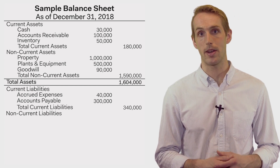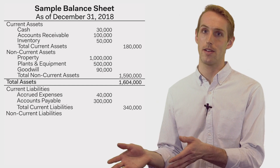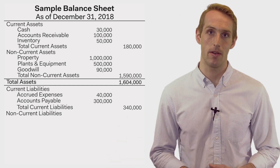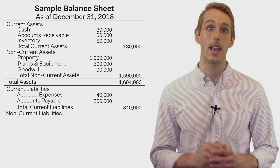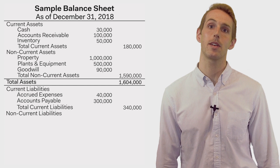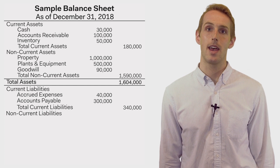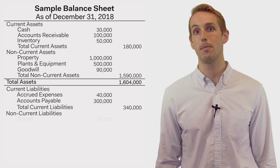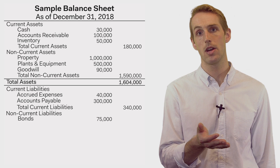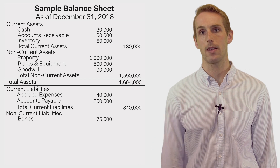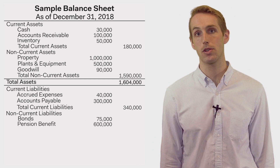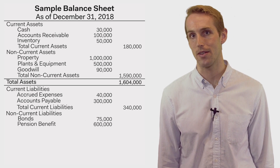The other type is a non-current liability. Non-current liabilities are those that cannot be expected to be paid within one year's time. An example would be a bond that a company has issued for cash, or a pension benefit owed to future or current retirees.